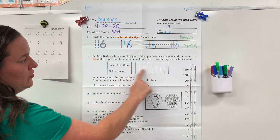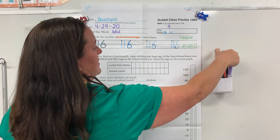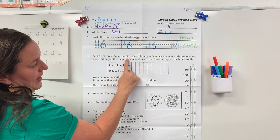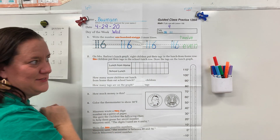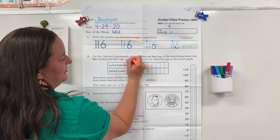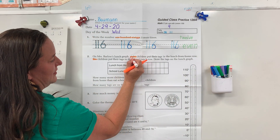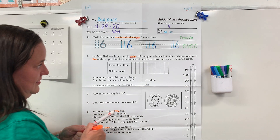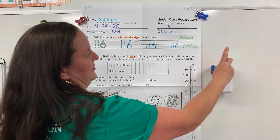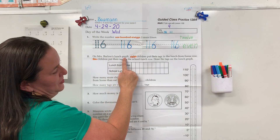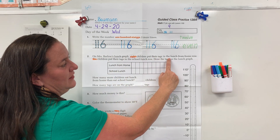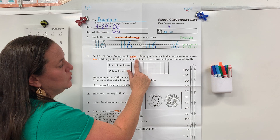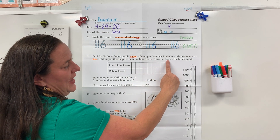We've got a graph today. Let's read the question — put your tracking finger and read along in your head. On Mrs. Barlow's lunch graph — oh, I missed the word 8. Maybe you guys found it. Let's underline 8 for it. On Mrs. Barlow's lunch graph, 8 children put their tags in the lunch from home row. 6 children put their tags in the school lunch row. Draw the tags on the lunch graph.